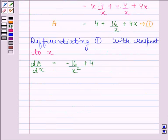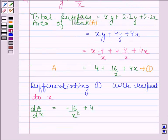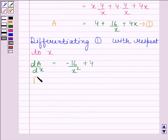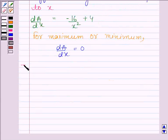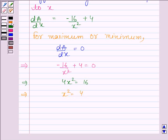Now for maximum, we will put dA by dx as 0. Now this implies minus 16 by x squared plus 4 is equal to 0. This implies 4x squared is equal to 16. This implies x squared is equal to 4. And this implies x is equal to 2.